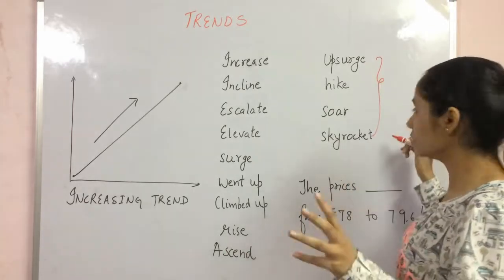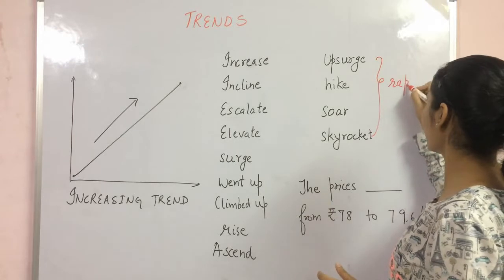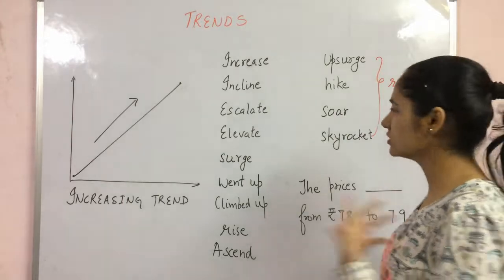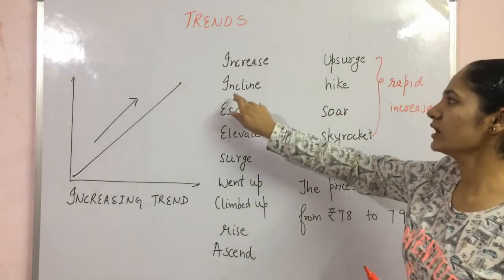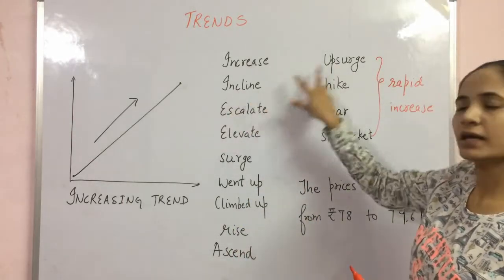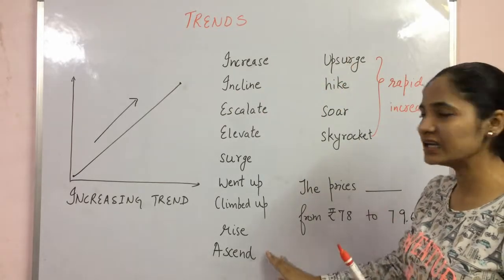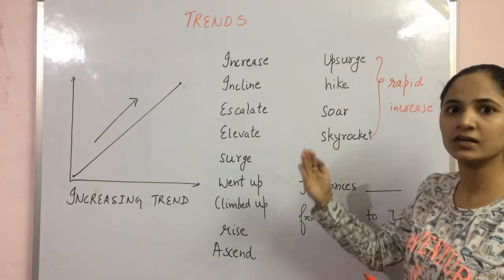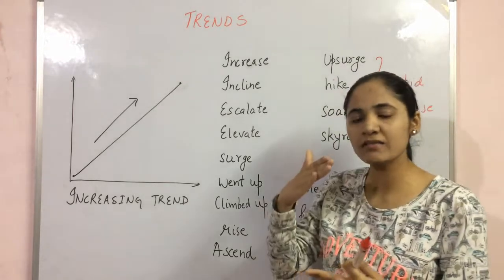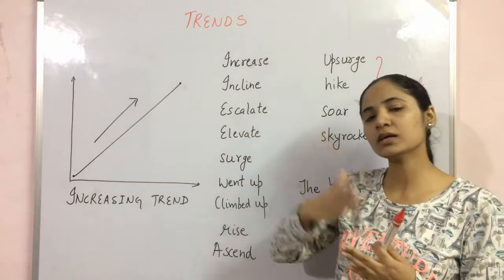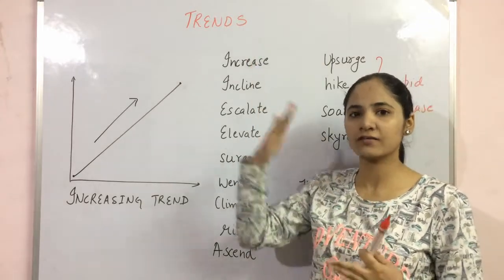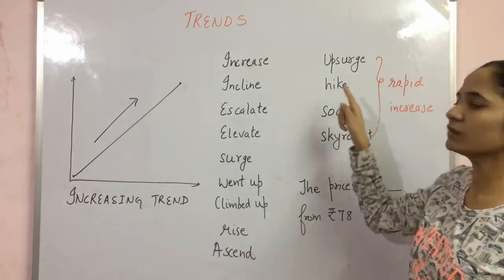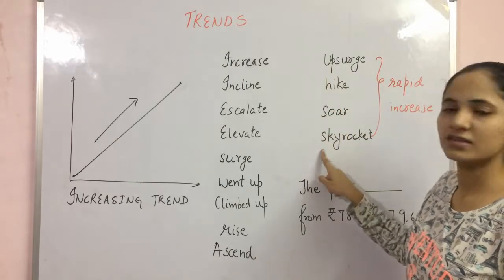The words upsurge, hike, soar, and skyrocketed are used specifically when there is a rapid — meaning sudden and large — increase. For example, if the value goes from 5 to 100, that is a huge gap, so it is a rapid increase. These are synonyms for a general increase, and these are the synonyms for a rapid increase.